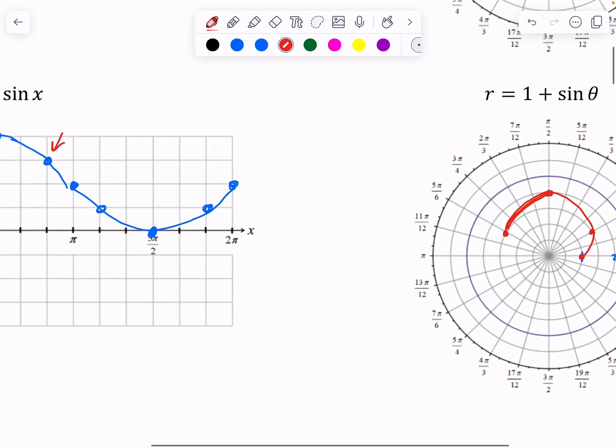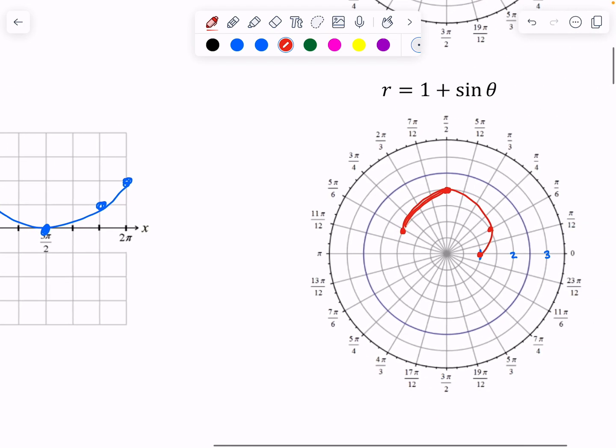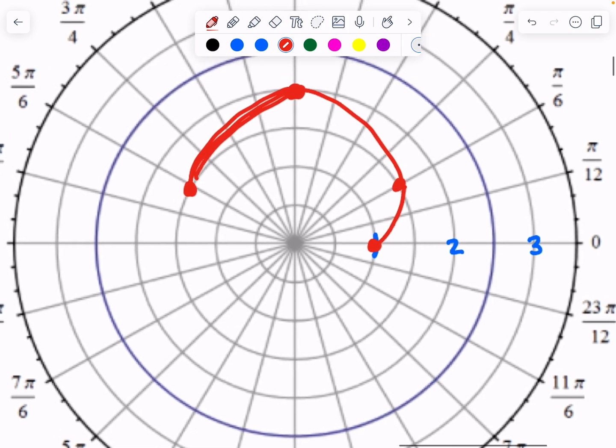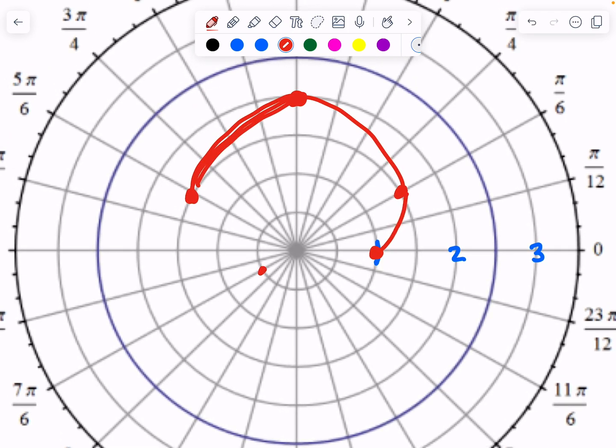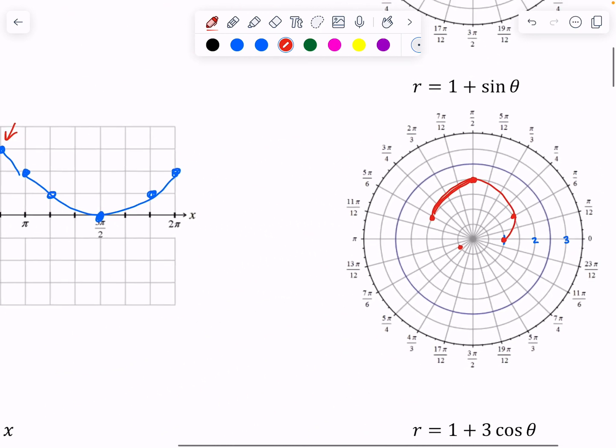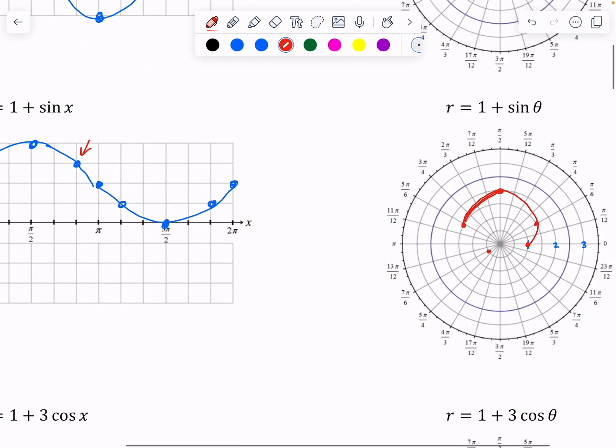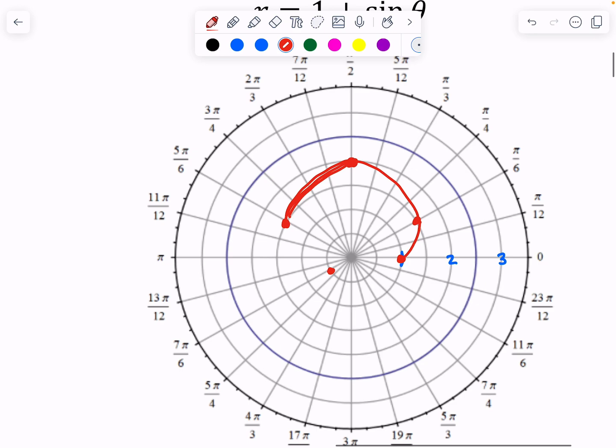And then where by seven pi over six, I'm at one half. So seven pi over six is here. We're at one half. I can't see what I'm doing. Seven pi over six is this line and we are here. And then did I get to pi? No, I didn't. I forgot. I skipped pi. Oh, terrible. Pi, I'm at two.